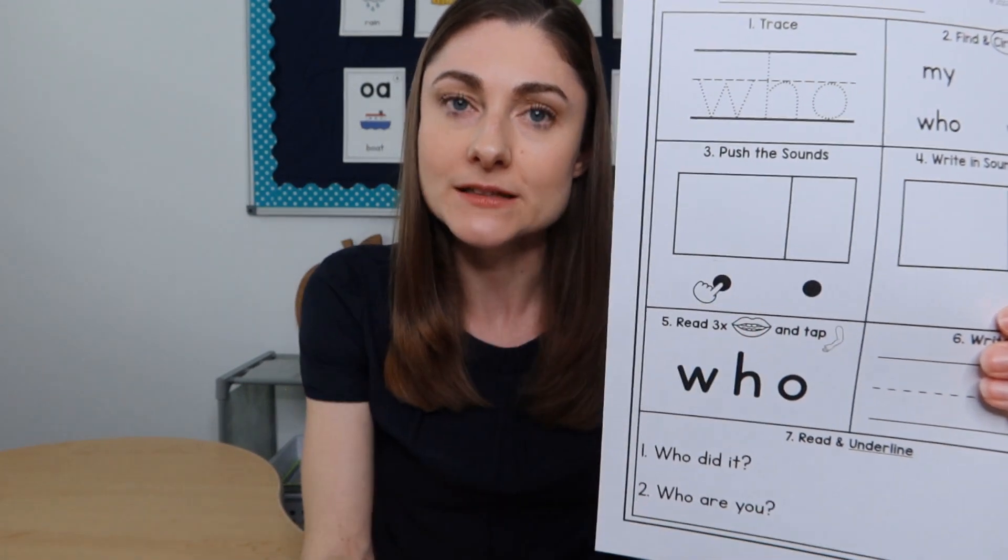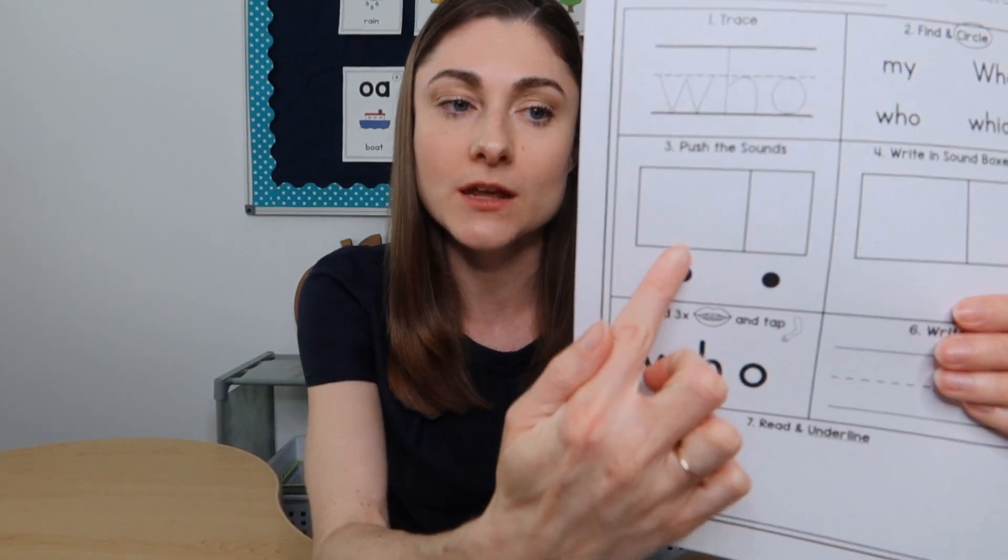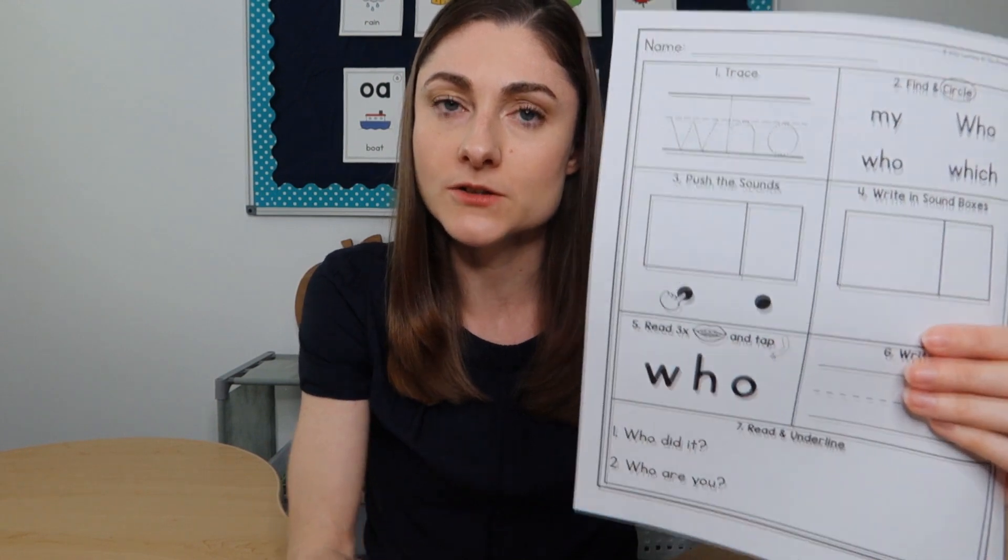Then the next thing I would do is talk about the sounds in the word. You can have sound boxes where the kids are pushing counters for each sound in the word, or you can just have them chop or tap out the sounds. If the word is "from," the sounds would be F-R-uh-M, and you want the kids to do it left to right with their non-dominant hand. At this point, I'm not asking them to talk about the letters or having them look at the word — I want them to just listen for and identify the sounds.